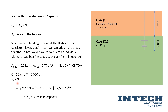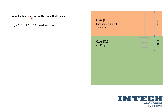For the ultimate capacity load calculation, we take the area of the helices times cohesion times the bearing capacity factor. The area of the 10-inch plate is 0.531, the area of the 12-inch plate is 0.771. We sum these together, multiply that quantity by 2,500 PSF for cohesion, and multiply by the bearing capacity factor of 9. That calculates out to 29,295 pounds of ultimate load capacity. Comparing that to our design load of 24,000 pounds, this is definitely not enough ultimate capacity to achieve a factor of safety of 2, so we need to select a new lead section with more flight area.